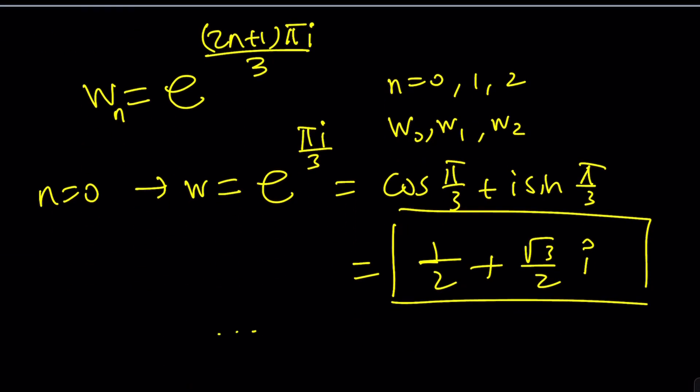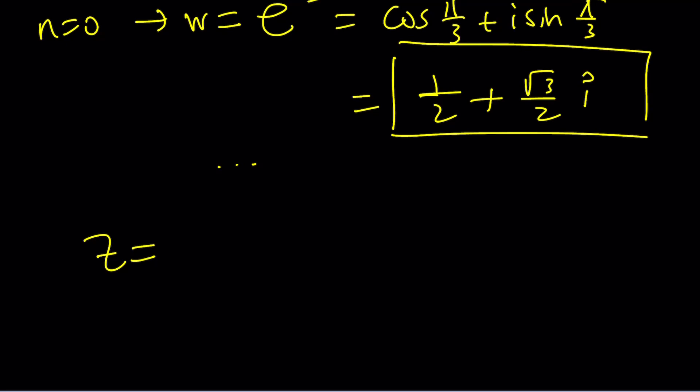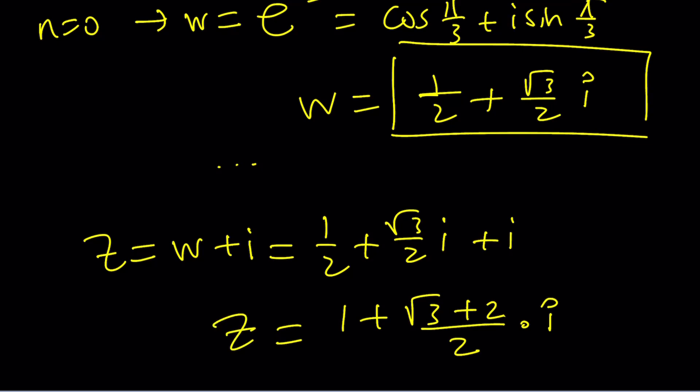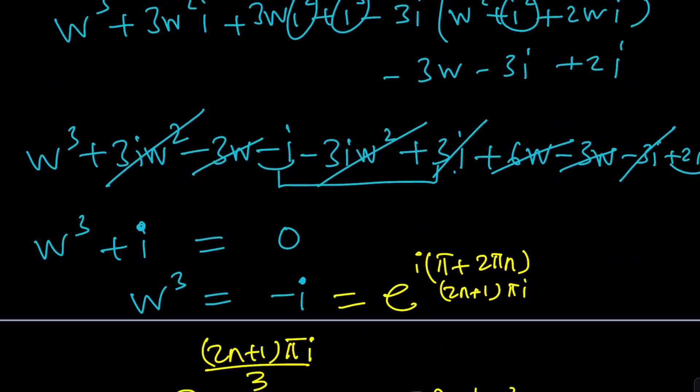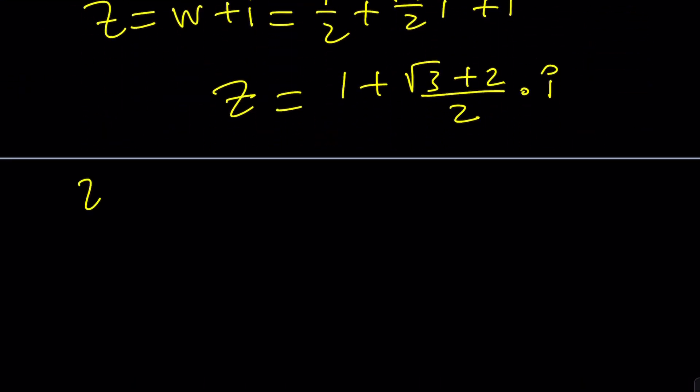But this is just part of the equation. z equals w plus i. So if this is w then z is going to be w plus i which is 1 half plus root 3 over 2i. And then I'm supposed to add i to it and guess what that makes? (1 plus root 3 plus 2) over 2i. Obviously there's a couple more ways to write it. That was the first method. Kind of like expand and use a little bit of substitution and get to a solution. I only did one but the rest is yours.